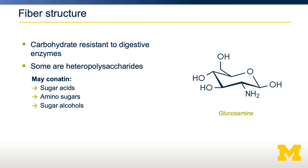Glucosamine, shown here on the right, is an amino sugar. It's defined as such because there's an amino group — the NH2 group — attached to what is normally a monosaccharide.